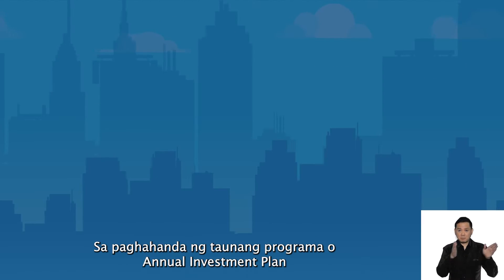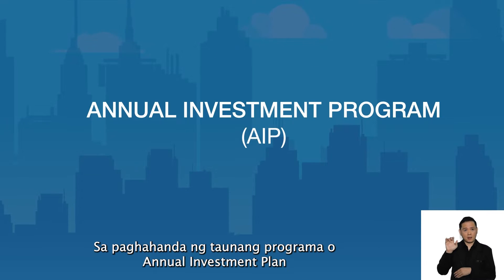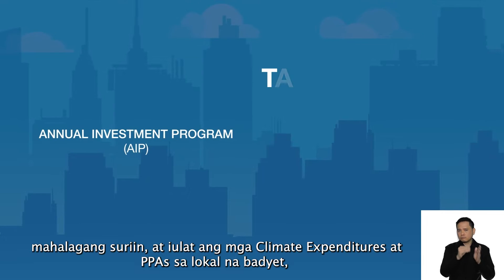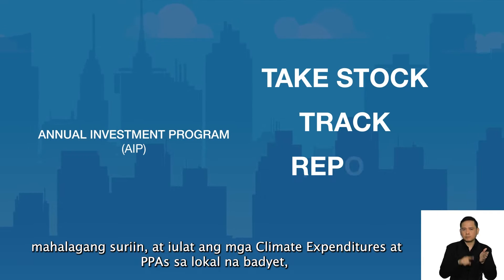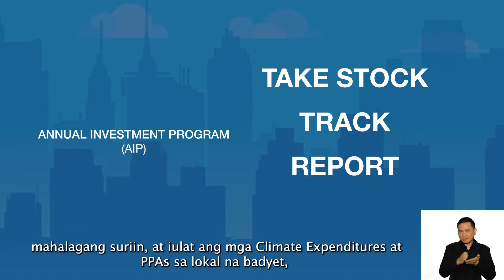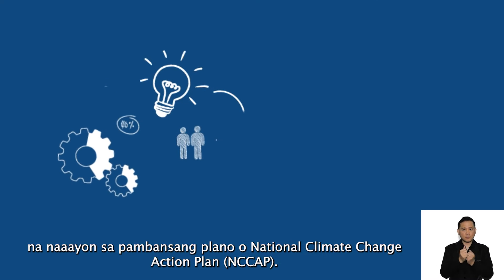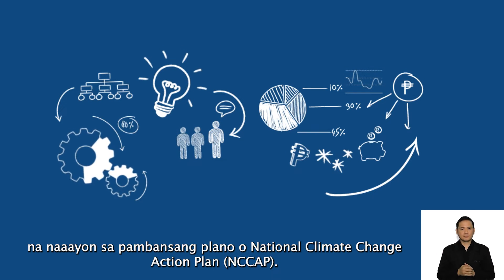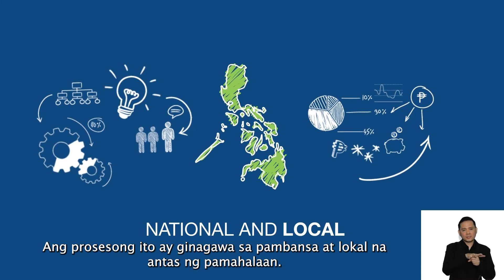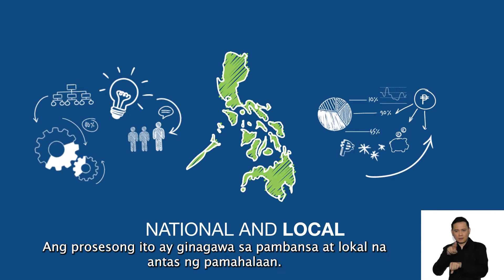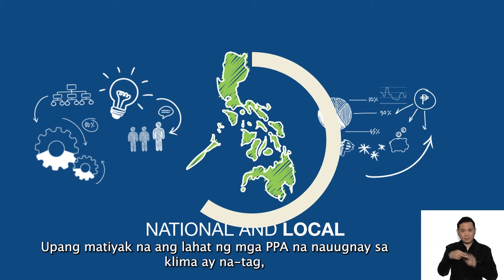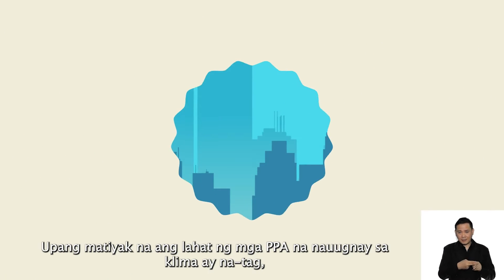During the preparation of the annual investment program, it is essential that you take stock, track, and report these climate expenditures and PPAs in the local budget, aligning with the National Climate Change Action Plan. This process is done both at the national and local levels, to ensure that all climate-related PPAs are tagged.